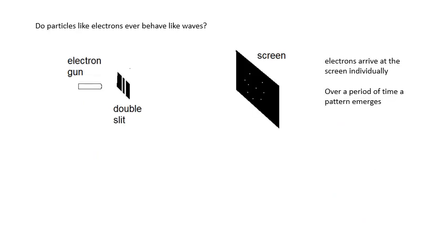Now, electrons — is an electron a particle? We've always thought of it as being a particle. It has mass: 9.1 times 10 to the minus 31 kilograms.